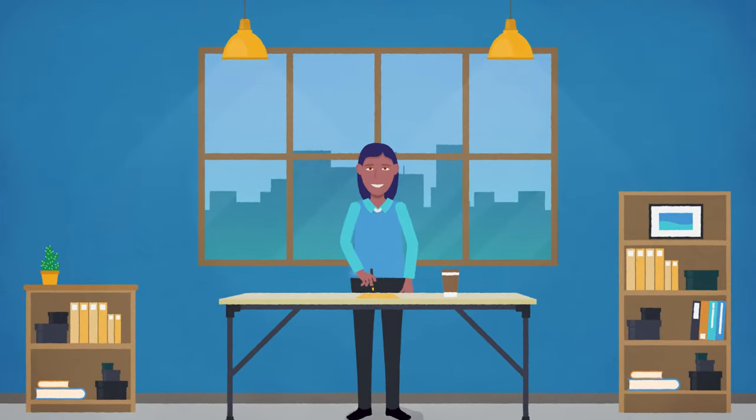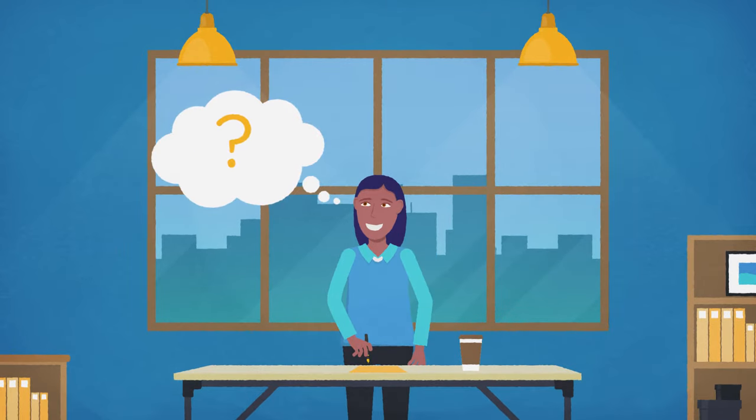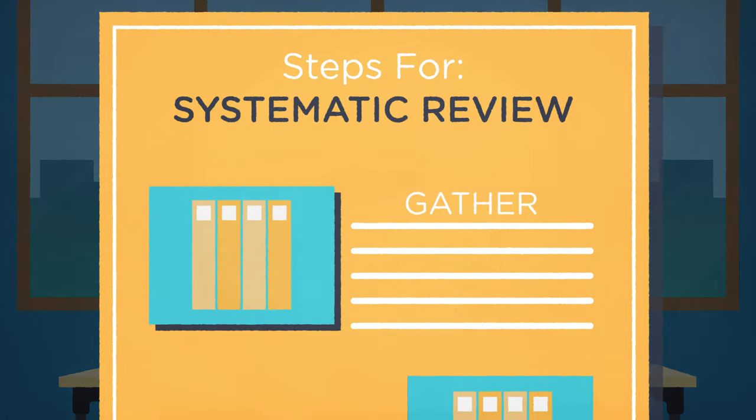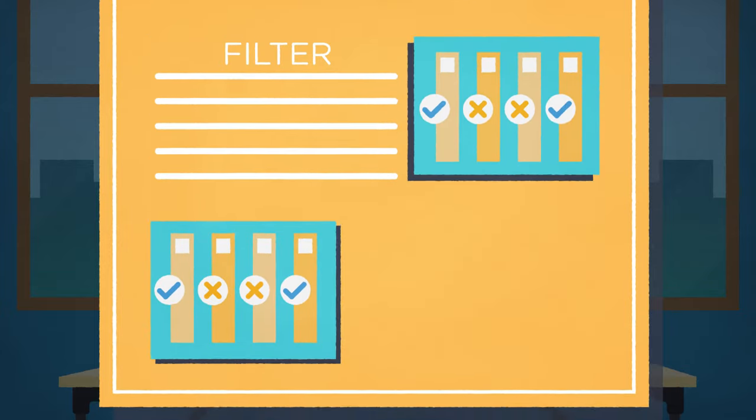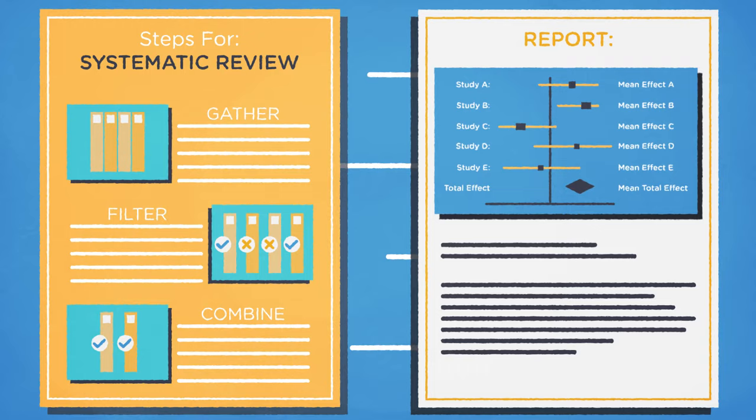From a distance, the steps of a systematic review look pretty basic. To answer a question or a series of questions, you just gather all the information that exists, filter out the information that doesn't apply to your question, then combine it all together into a report about existing evidence and research gaps.